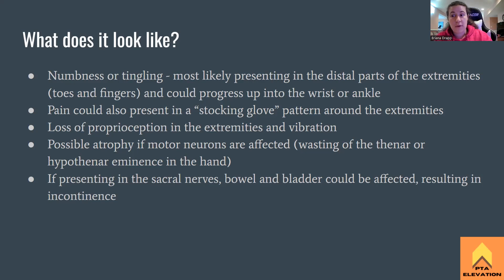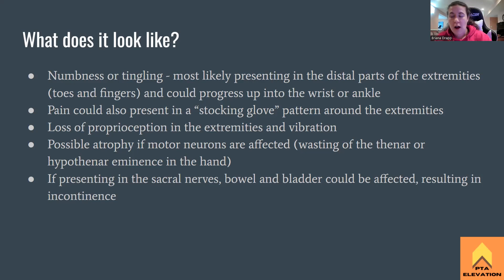If polyneuropathy is affecting the motor neurons — remember numbness and tingling are more sensory — but if the motor neurons are affected, we're going to see muscle atrophy. The muscle is not being activated, so therefore muscles will atrophy, similar to a spinal cord injury. The nerve signal is not getting to the muscles, so they're going to atrophy. We'll see things like wasting described in specific muscles as a result.